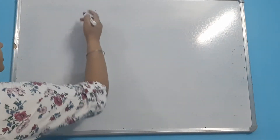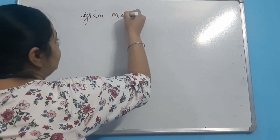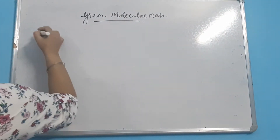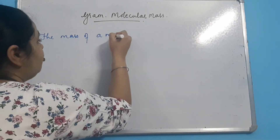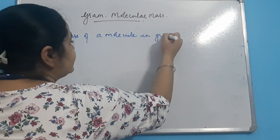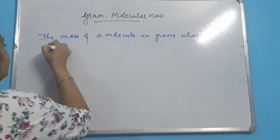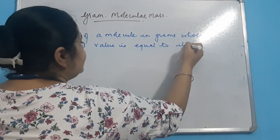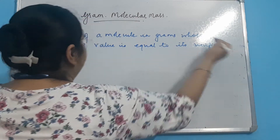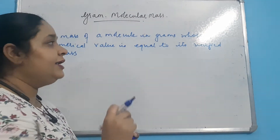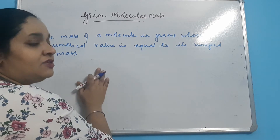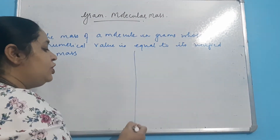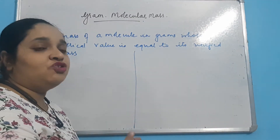Jaise hamare paas gram atomic mass hota hai, waise hamare paas gram molecular mass bhi hota hai. Gram molecular mass hum compounds ke case mein ya molecules ke case mein use karenge. Whenever we talk about molecules, we use the term gram molecular mass. So gram molecular mass kya hoga: the mass of a molecule in grams whose numerical value is equal to its unified mass — same definition, but now in the context of molecules, not atoms.